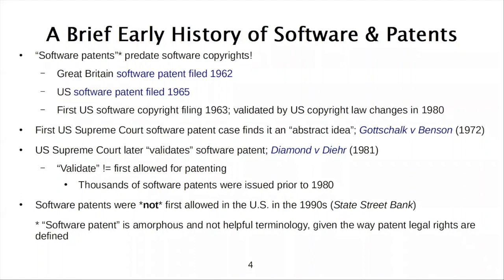A few years later in a separate case, Diamond v. Diehr, the United States Supreme Court first validated that one could pursue a patent related to software and that it wasn't abstract in a way that made it ineligible for patenting. That doesn't mean 1981 was the first time a patent was ever valid or issued in the United States — since the 60s, people have been filing software patents. There were in fact many thousands of software-related patents in the United States before the 1980s. There was a development in the 1990s, a case called State Street Bank, which most people think of as opening the US patent system to software patents, but they were first allowed much earlier than that.